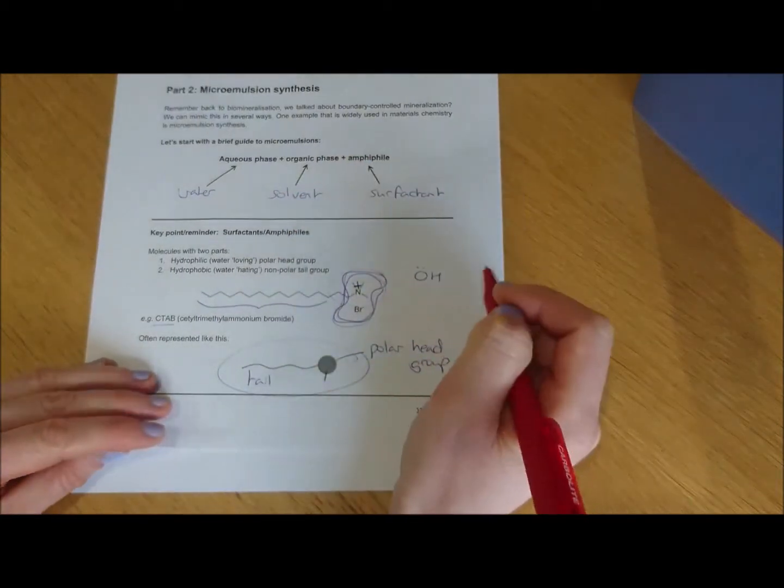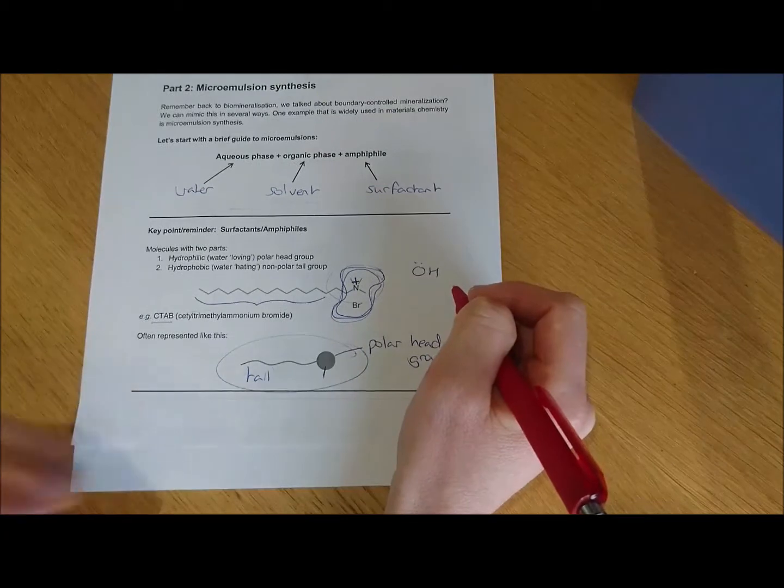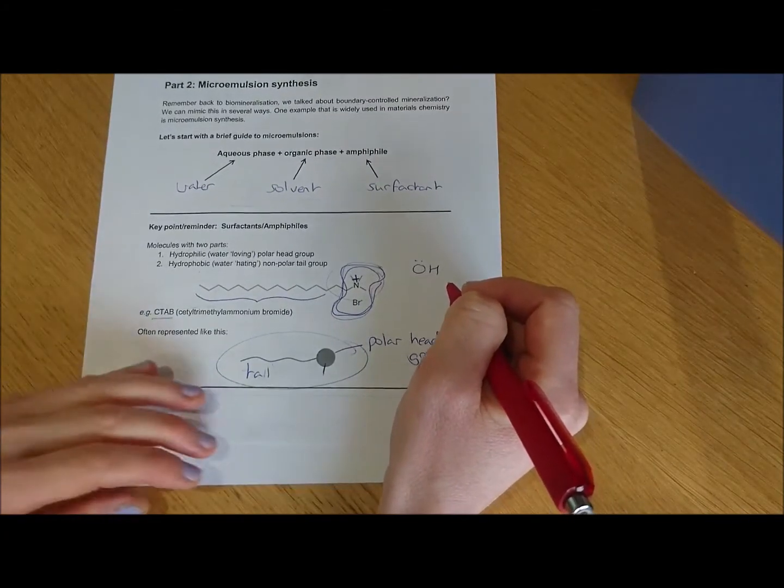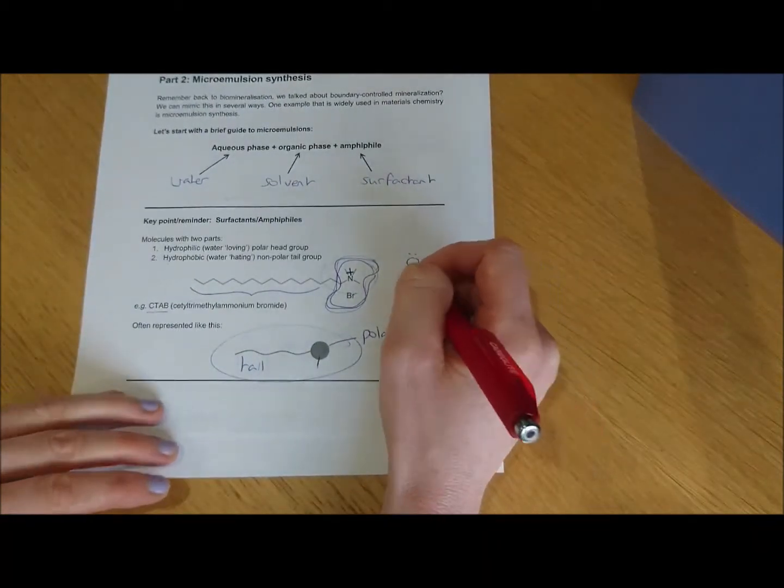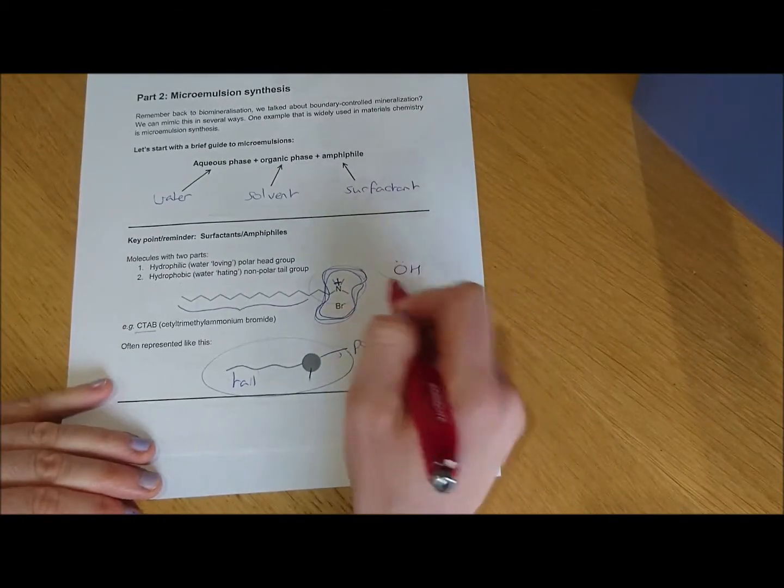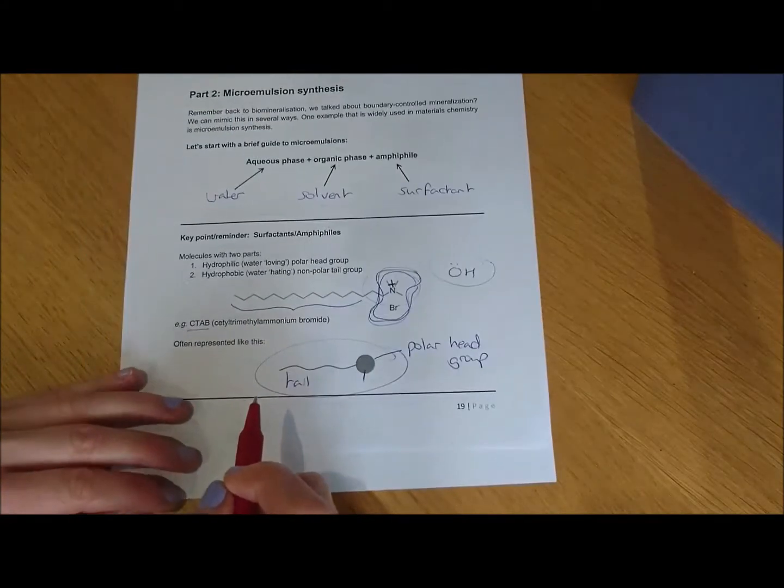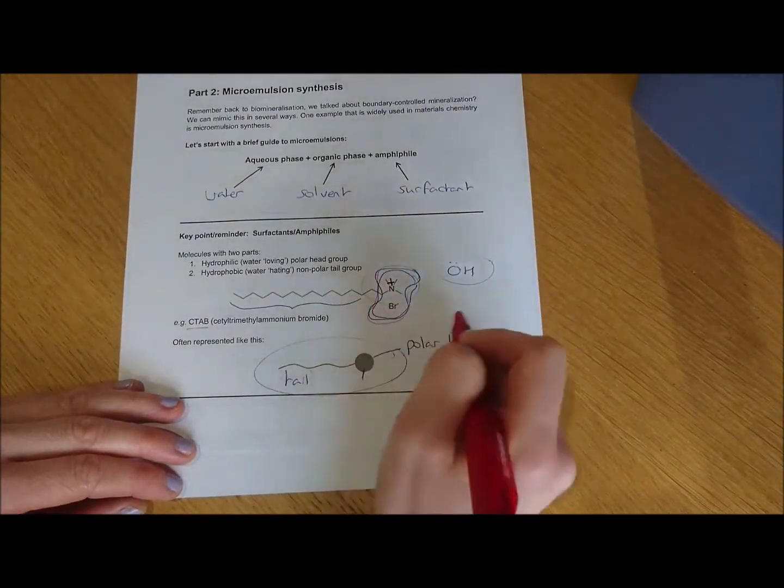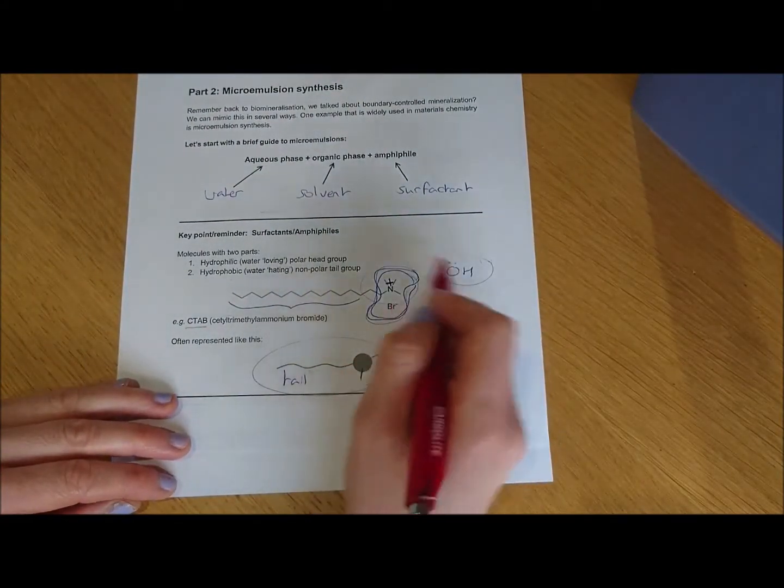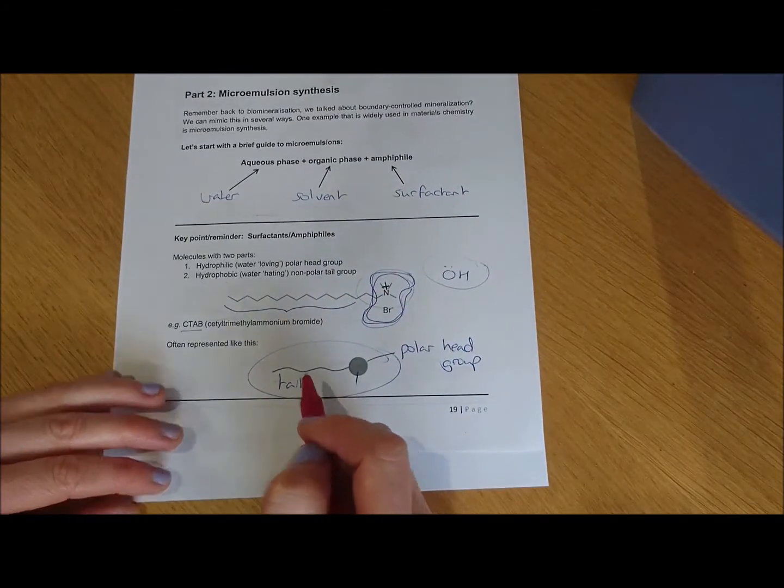You might have a negatively charged group, so a sulfate or sulfonate on your surfactant. Or you might just have something that's rich in polar functionality, so something with hydroxyl groups on the end. Various functionalities on the end which make up the polar head group of your amphiphile.